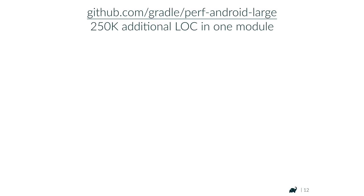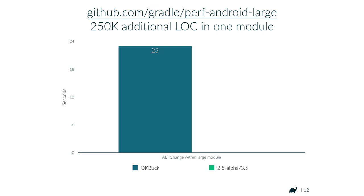We added 250,000 lines of code into one module of the performance Android large test build. This is where Buck becomes inefficient — it actually crashed when we added more than 250,000 lines. With Gradle, you can add five million lines and things will run stable. Even with 250,000 lines, when you change a class that has an ABI effect within that module, it takes 23 seconds with Buck and 9 seconds with 2.5 alpha. This is interesting for Android teams dealing with large modules.